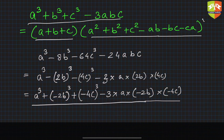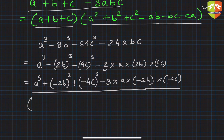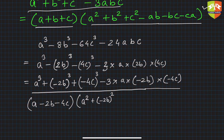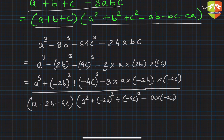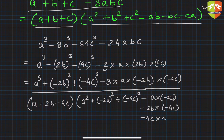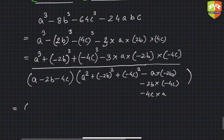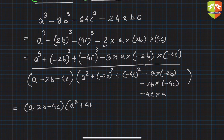Can we not factorize it very easily now? This will be a minus 2b minus 4c — the a plus b plus c form — times a square plus, for b square we take minus 2b whole square, and for c square we take minus 4c whole square. Then minus ab is a times minus 2b, minus bc is minus 2b times minus 4c, and minus ca is minus 4c times a. So this becomes a minus 2b minus 4c times a square plus 4b square plus 16c squared.